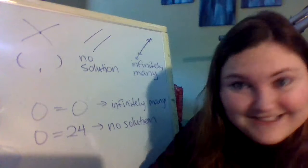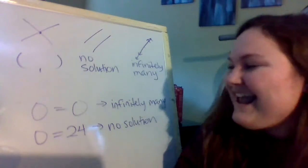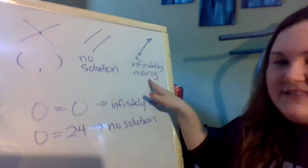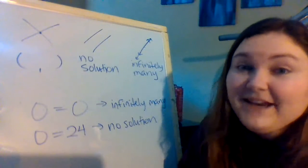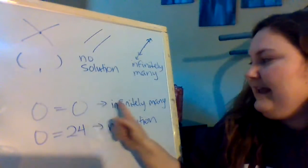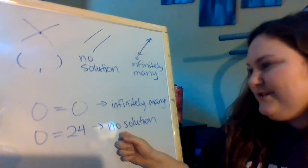So in these last problems where you get both variables eliminating, it's okay. It doesn't mean you're doing anything wrong. It just means that it's going to be one of these last options. It means depending on what you're left with, it's either going to be infinitely many solutions or no solution.